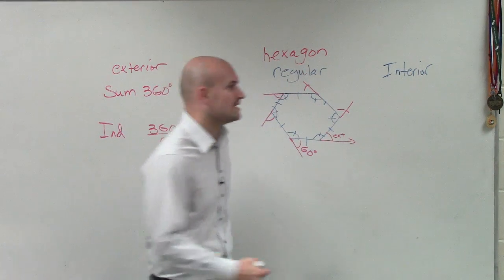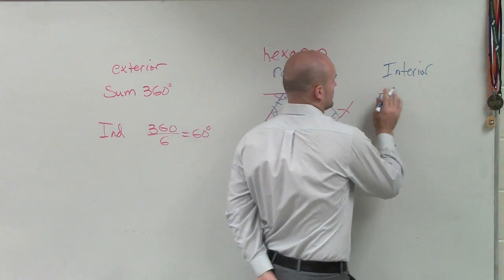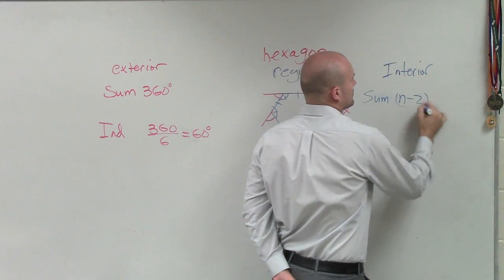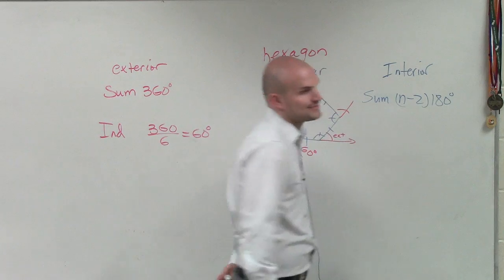So if we're going to go to the interior angles, we're going to have n minus 2. If I want to find the sum, that's n minus 2 times 180 degrees.